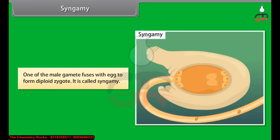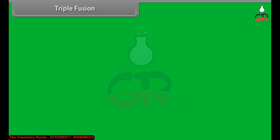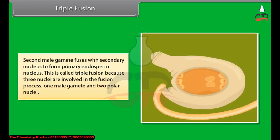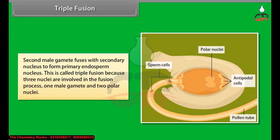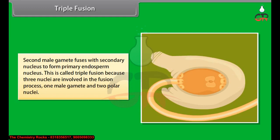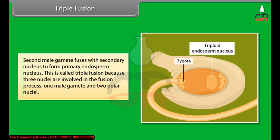Syngamy: One of the male gametes fuses with the egg to form a diploid zygote — this is called syngamy. Triple fusion: The second male gamete fuses with the secondary nucleus to form the primary endosperm nucleus. This is called triple fusion because three nuclei are involved in the fusion process — one male gamete and two polar nuclei.